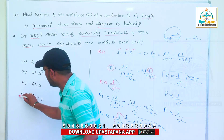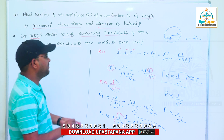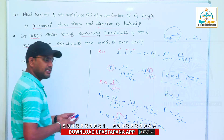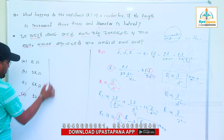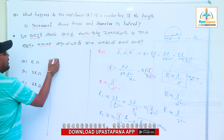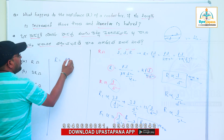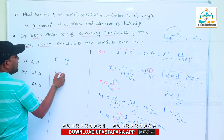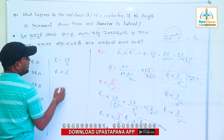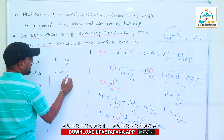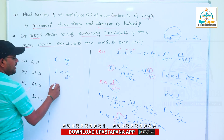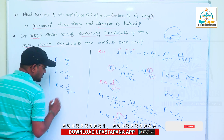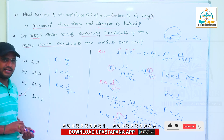Let's look at option D. The question we had to solve is straightforward. The design formula is R equal to rho L by A. R is directly proportional to L and inversely proportional to diameter squared, or equivalently inversely proportional to the square of the radius.